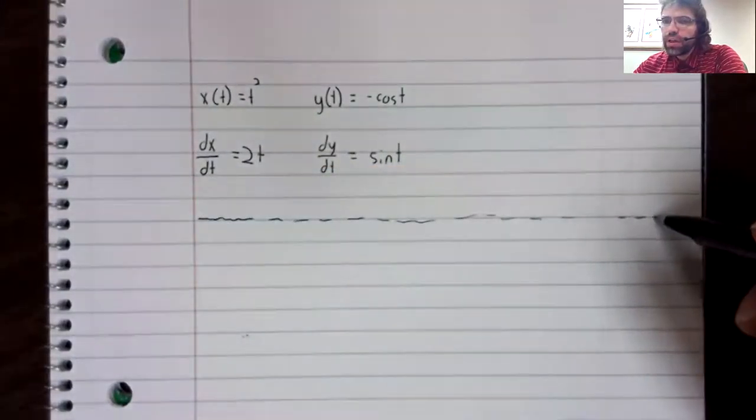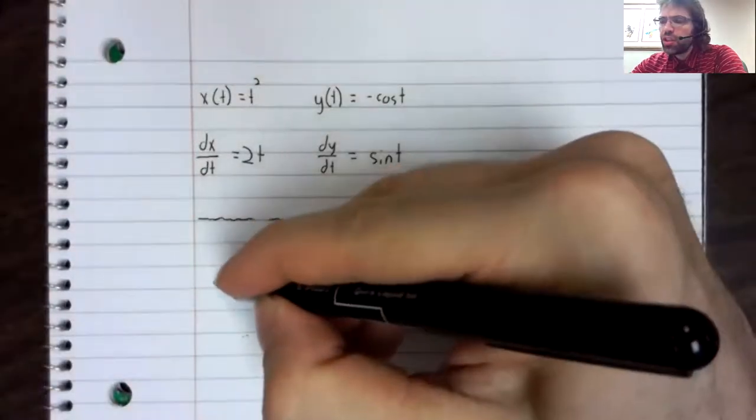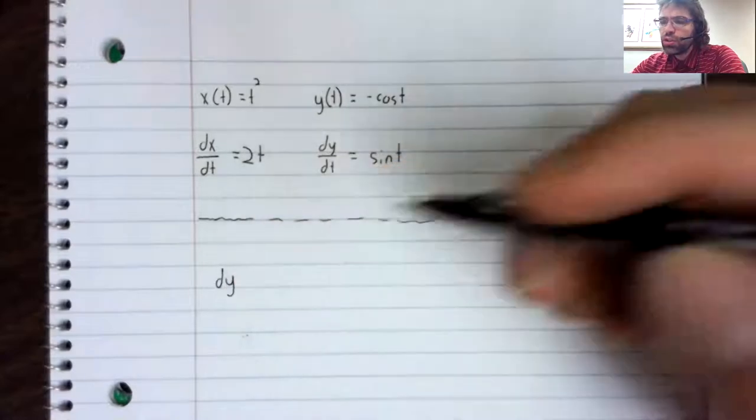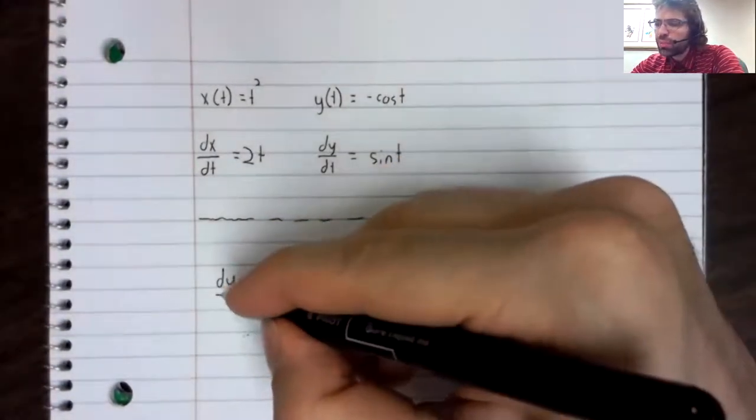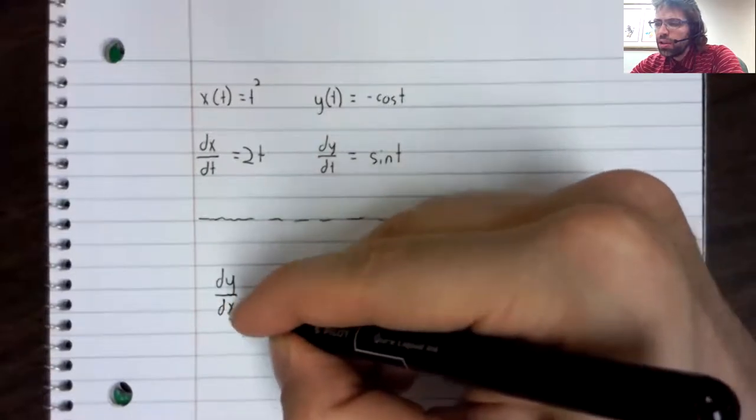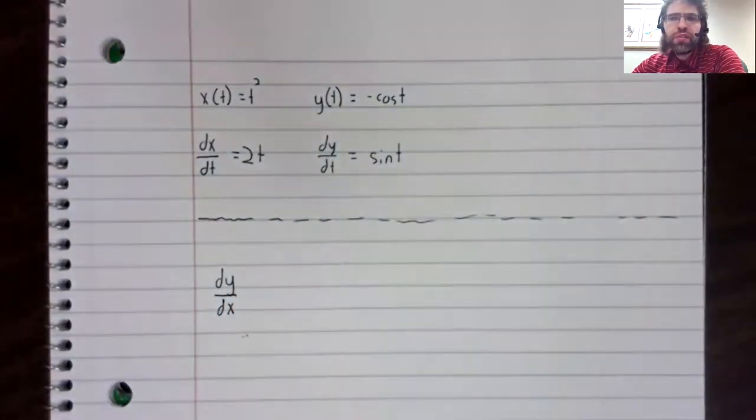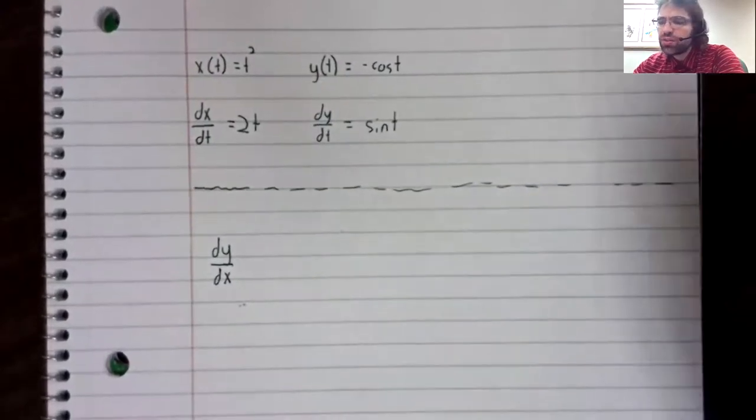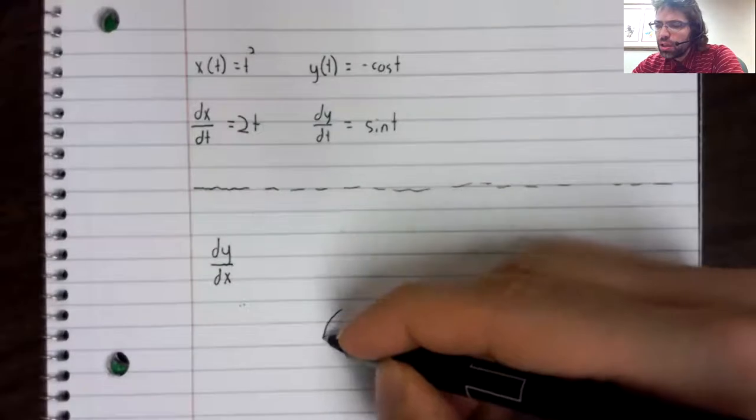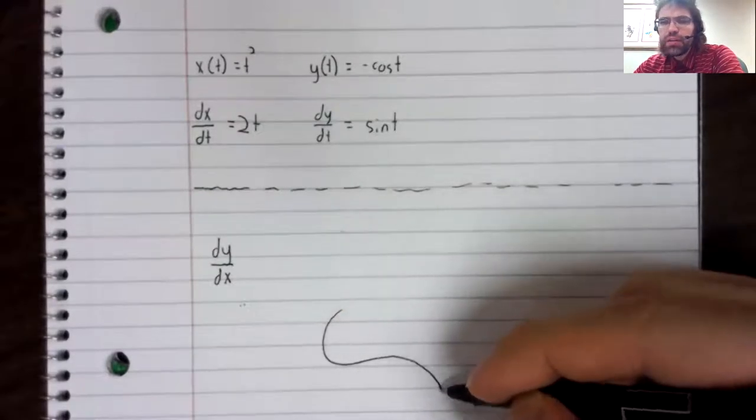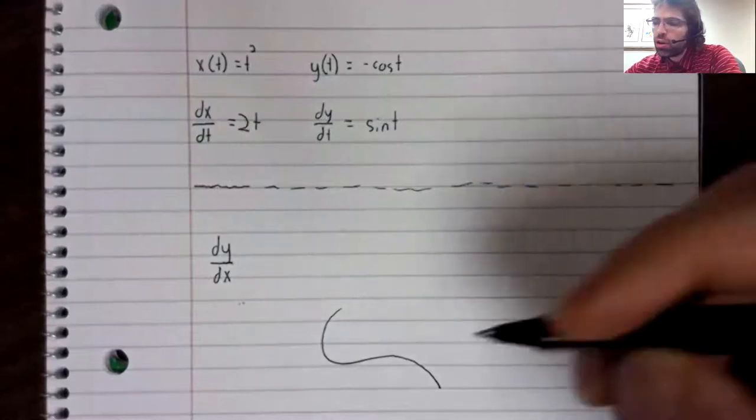What if we wanted to know not the derivative of y with respect to t, but the derivative of y with respect to x? I mean, just because we have a parametric curve...